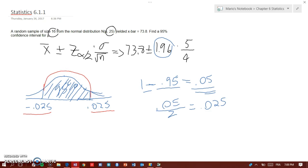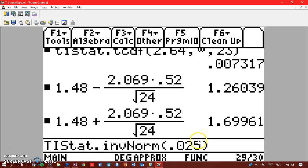0.025, when you add them together you get 0.05. So that means you have 0.05 in here.